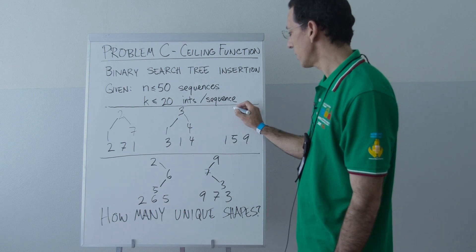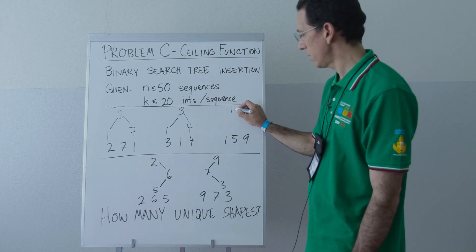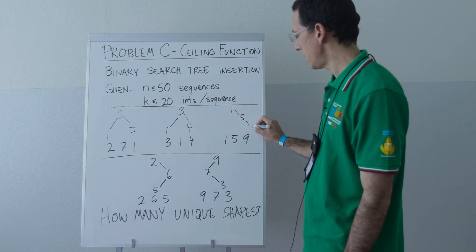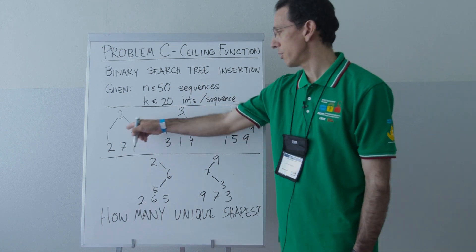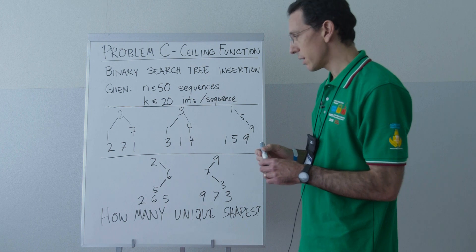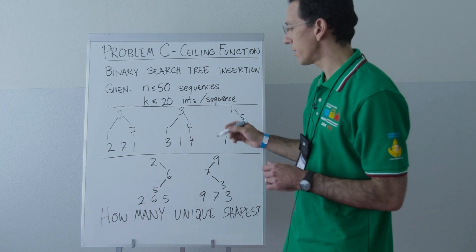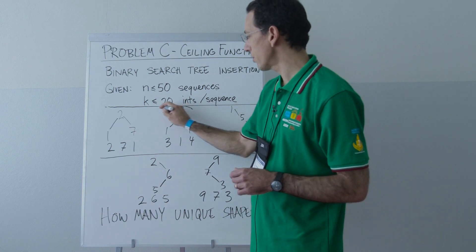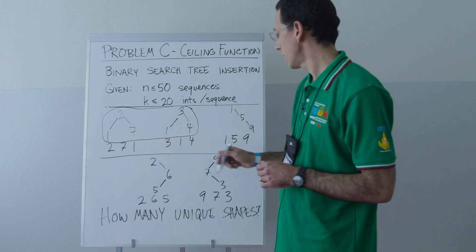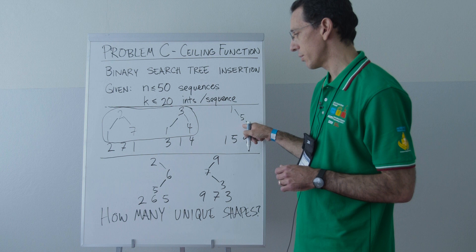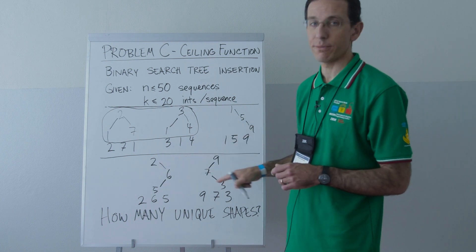1, 5, 9: if we insert in that order, 1 then 5 then 9, we get a different shape, a right-leaning tree, as opposed to these two balanced trees. And the goal in this problem is actually to identify the fact that these two trees have the same shape, which is different than this shape, which is different than this shape, which is different than this shape.